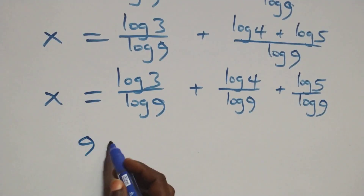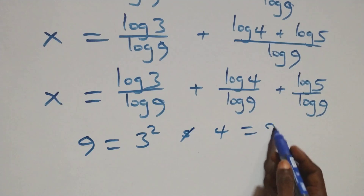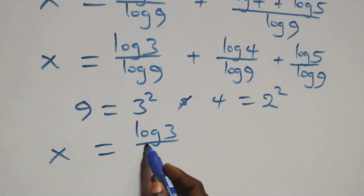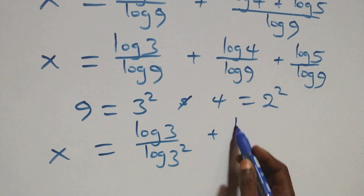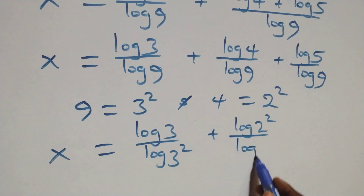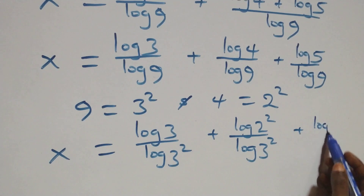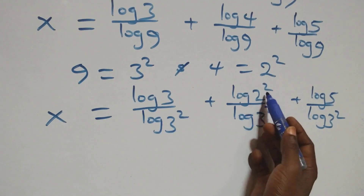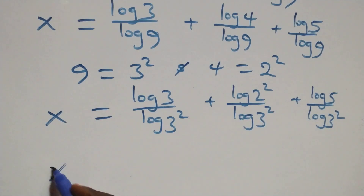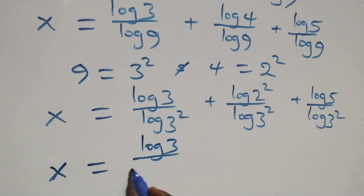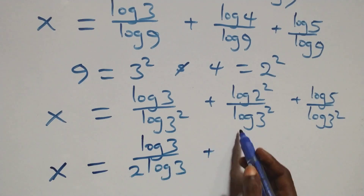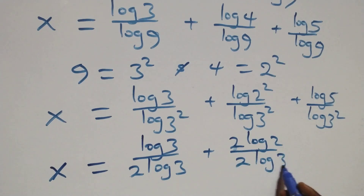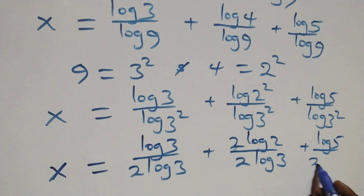Now, 9 can be written as 3 squared, and 4 is 2 squared. So what we have becomes x equals to log 3 over log 3 squared, plus log 2 squared over log 3 squared, plus log 5 over log 3 squared. Applying the power rule of logarithms, the exponents come down: x equals to log 3 over 2 log 3, plus 2 log 2 over 2 log 3, plus log 5 over 2 log 3.